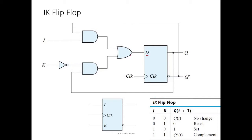For the D input, we are going to supply this combinational circuit as input. The AND gate is computing J and Q̄. So this gives us J·Q̄, and the other AND gate computes K̄ and Q, giving K̄·Q. We OR these two terms together to get J·Q̄ + K̄·Q as the input to the positive edge-triggered D flip-flop.